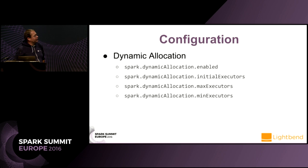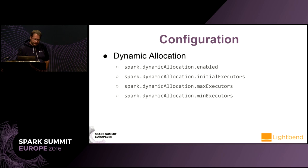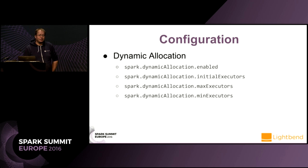Let's speak about configuration, starting with the easy part. There's a fair amount of options needed to get dynamic allocation working. The easy ones are: the option to enable it; initial executors, max executors, and min executors — information to the estimator about how many executors to start with when you begin, what the maximum number you can request from the cluster manager is, and the lower limit of how many executors to keep running even if you don't have enough work for all of them.